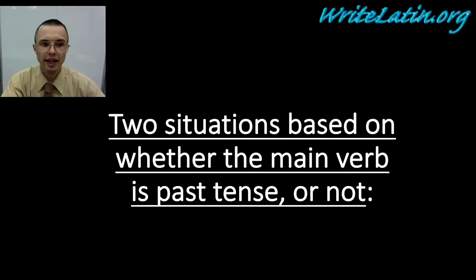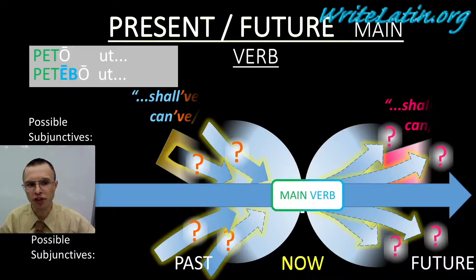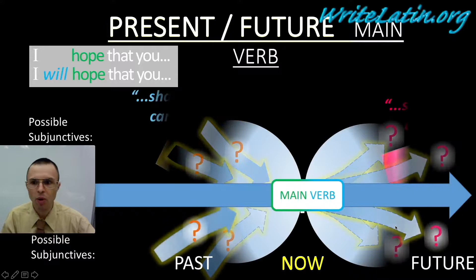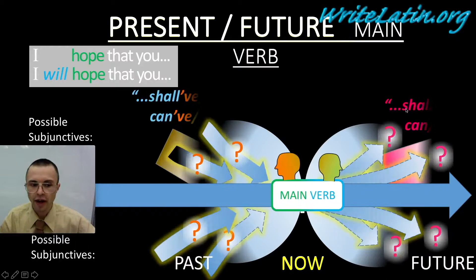In English and Latin, there are two different situations based on whether the main verb in the sentence is past tense or present tense. The first situation is that the main verb is either present or future tense — like 'I hope that you' or 'I will hope that you.' In Latin, this would be 'peto ut' or 'petebo ut.' If that's the case, the subjunctive verb will be some form of shall, will, can, or may — either shall/will/can/may itself if it's forward-looking, or shall/will/can/may of if it's backward-looking. This is the tense we're going to get in chapter 32.